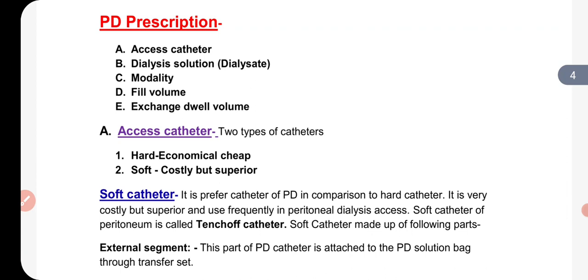When a doctor or nephrologist takes a patient to peritoneal dialysis, he tells you about the process. When the peritoneal dialysis process is underway, there will be some things to advise. Access catheter means the patient will be told that a catheter will be used for peritoneal dialysis. And also, the PD solution used for peritoneal dialysis will be explained.